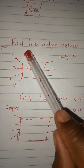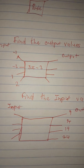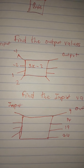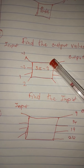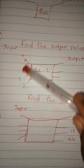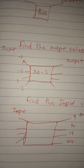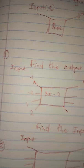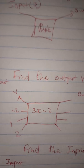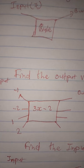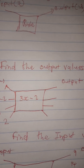At number one, we are required to find the output values. To find output values, you are going to use the rule with the given inputs. This is what we are going to do.